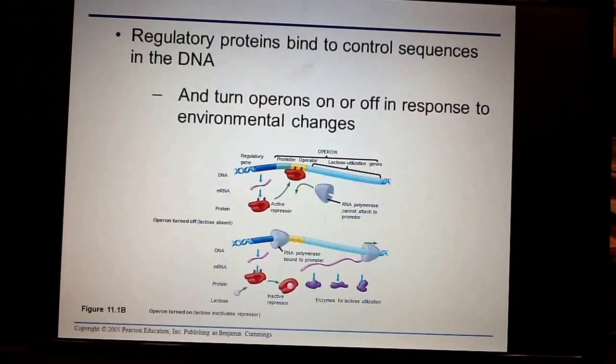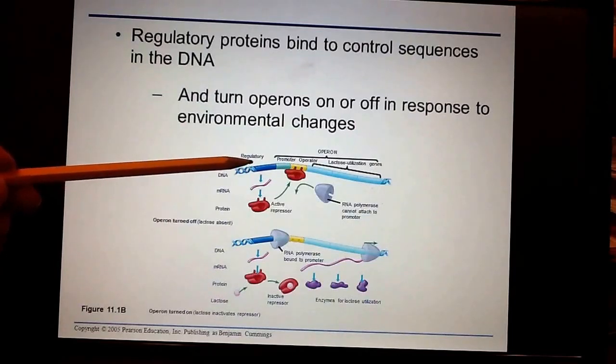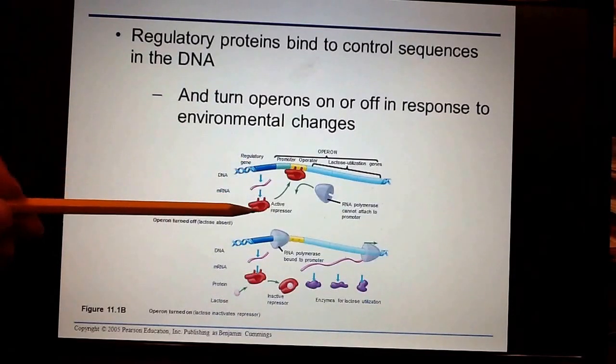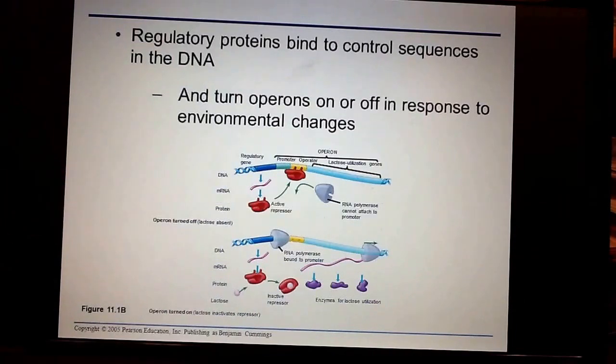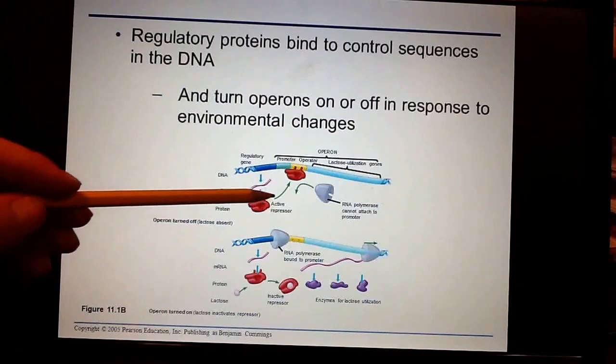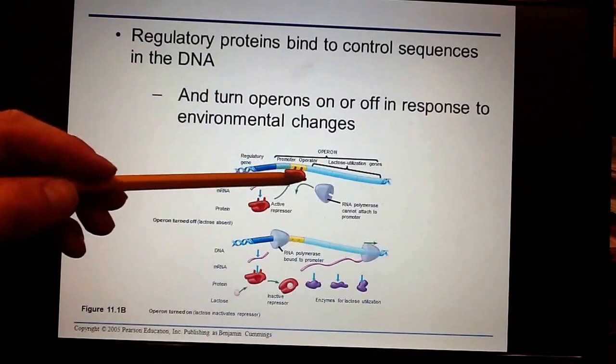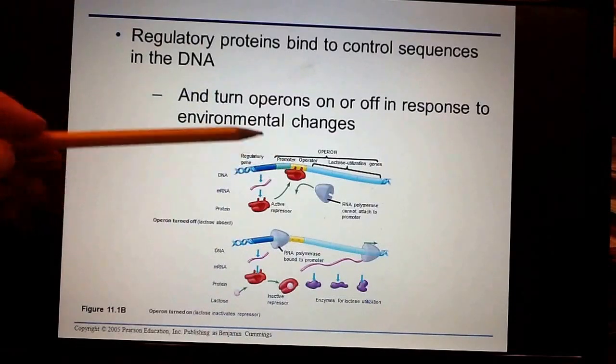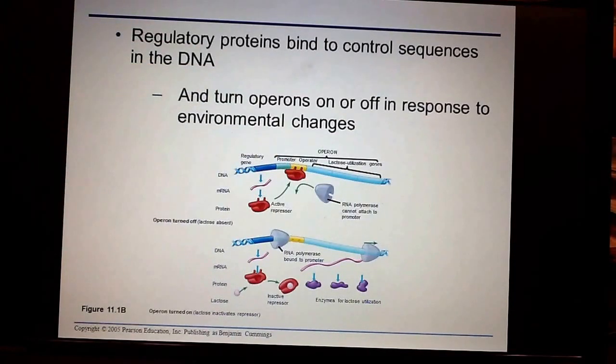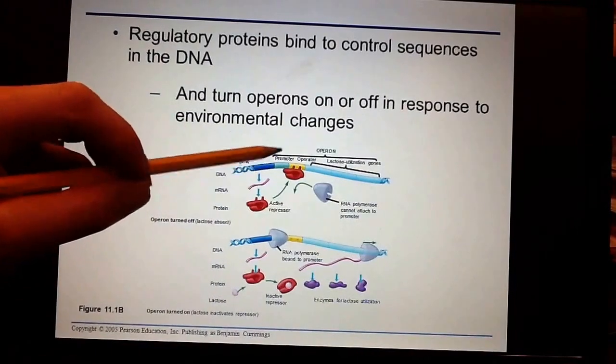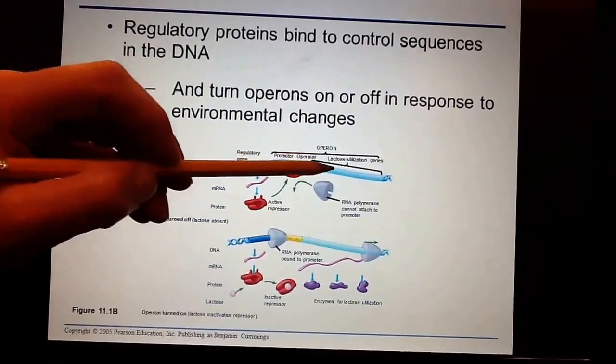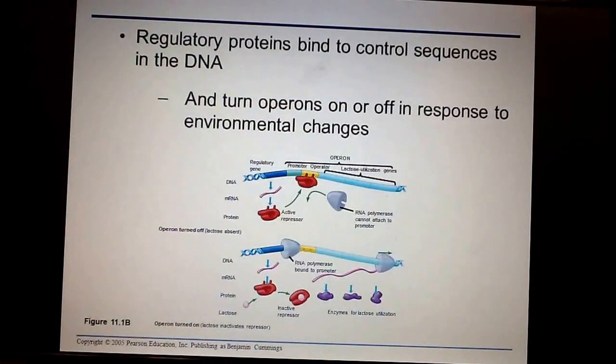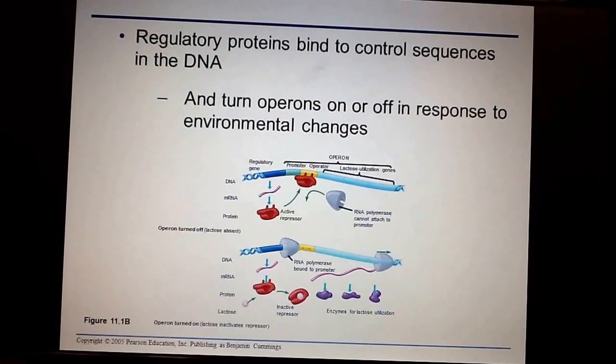One of the best-known operons is the LAC operon. What we can see here are two very clear examples. Here's our regulatory gene. We're going to express that gene and create a protein, which is a repressor. This protein is a repressor, so this protein binds to the DNA operator. In doing so, it prevents RNA polymerase from being able to fit and bind at the promoter region, because that's where RNA polymerase binds. If RNA polymerase can't bind to the promoter, it cannot transcribe the genes that follow that promoter. Thereby, we don't make the RNA, we can't make the protein for those genes.